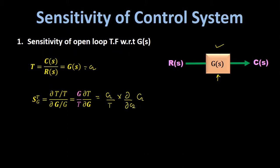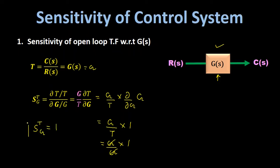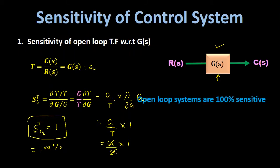When we differentiate G with respect to G we get 1, so the sensitivity equals G/T × 1. Substituting T = G, we get G/G × 1 = 1. Therefore, the sensitivity of the open loop transfer function with respect to G(s) equals 1, which means open loop control systems are 100% sensitive to parameter variations.